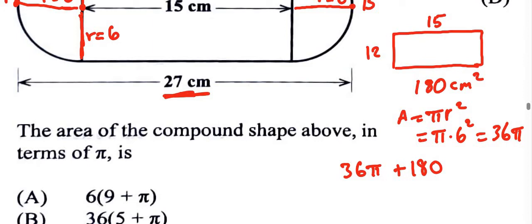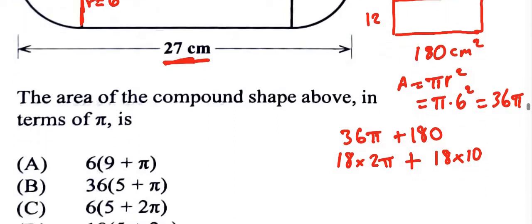36 can go into 180, but you might not be able to see that. But you might be able to see that 18 times 2 is 36. So I can write this as 18 times 2 pi, and I can write this as 18 times 10. 18 times 10 is 180, and 18 times 2 is 36. So I can factor out the 18. That leaves me with 2 pi plus 10.